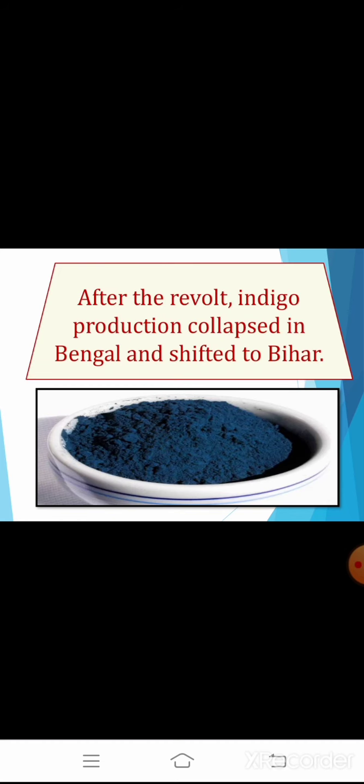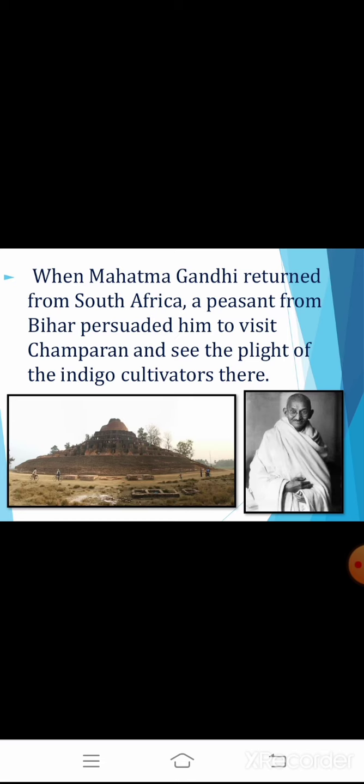After the revolt, indigo production collapsed in Bengal, and the planters shifted their operations to Bihar. With the discovery of synthetic dyes in the late 19th century, their business was severely affected, but they managed to expand production there. When Mahatma Gandhi returned from South Africa, a peasant from Bihar persuaded him to visit Champaran and see the plight of the indigo cultivators. Mahatma Gandhi's visit in 1917 marked the beginning of the Champaran movement against the indigo planters.